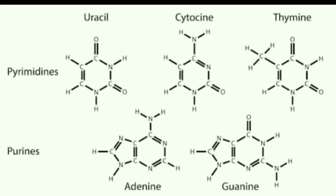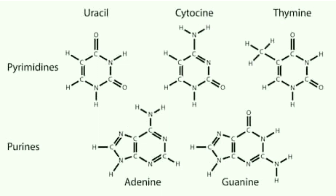The nucleotides fall into two groups: pyrimidines and purines. Pyrimidines include uracil, cytosine, and thymine — uracil is present only in RNA, while cytosine and thymine are present in DNA. Purines are adenine and guanine. Pyrimidines always pair with purines. The key structural difference is that pyrimidines have one carbon-nitrogen ring, whereas purines have two carbon-nitrogen rings.